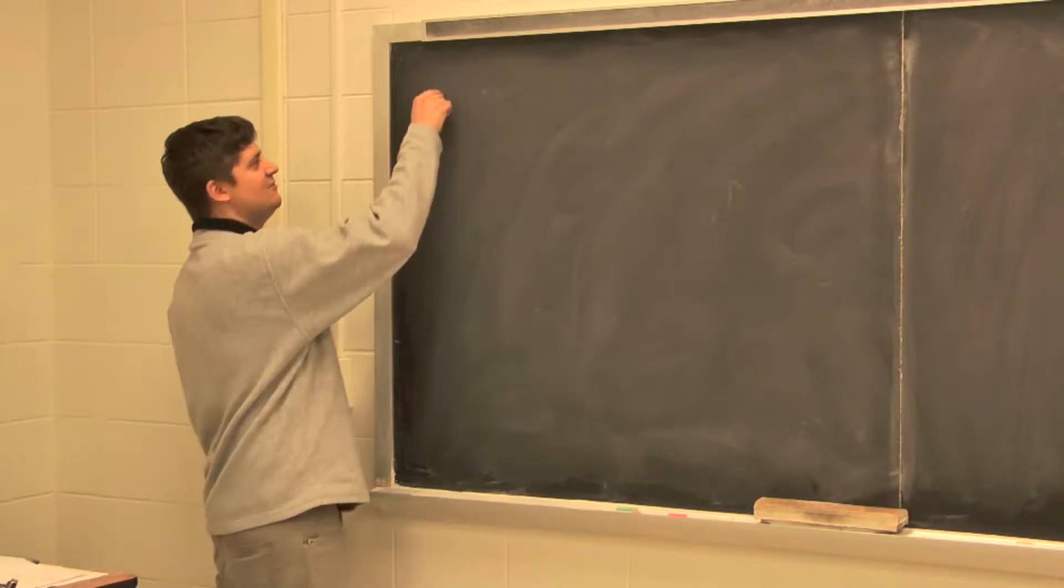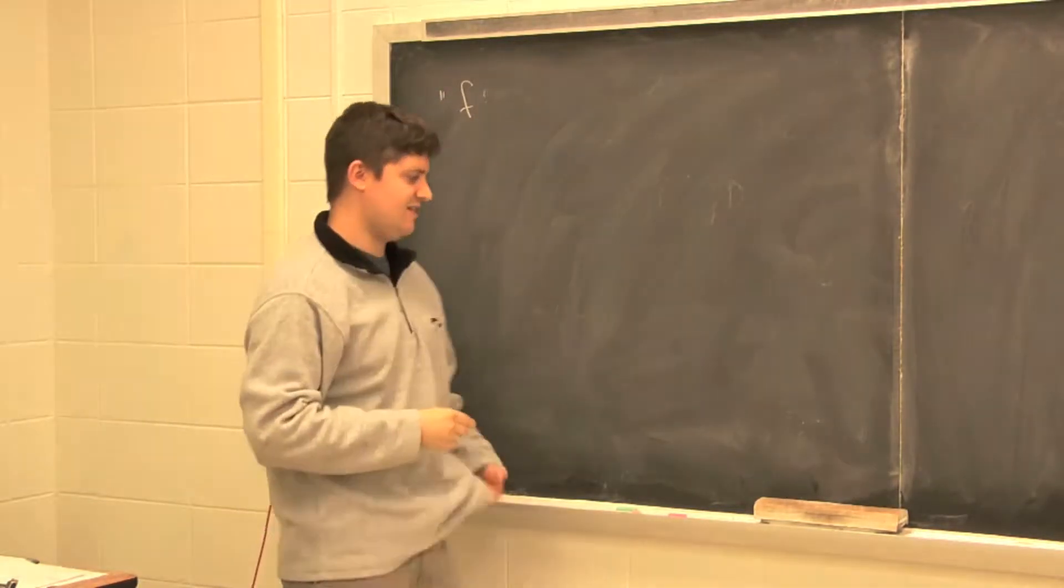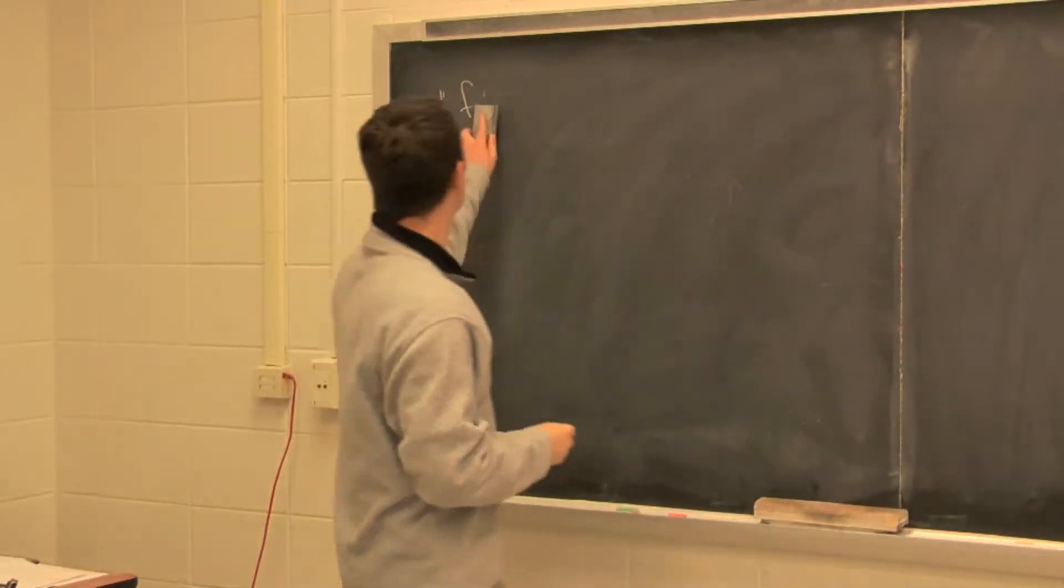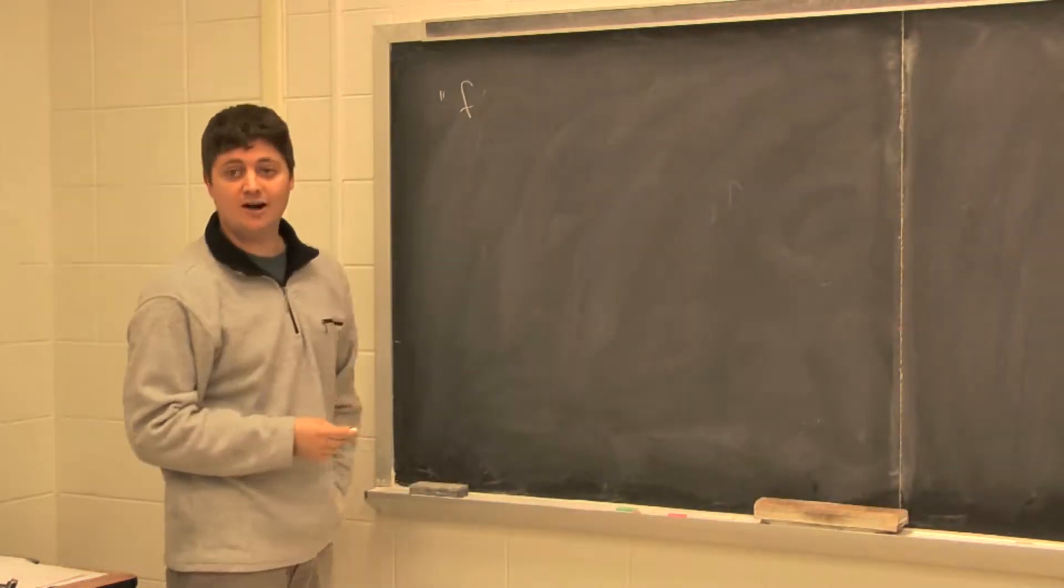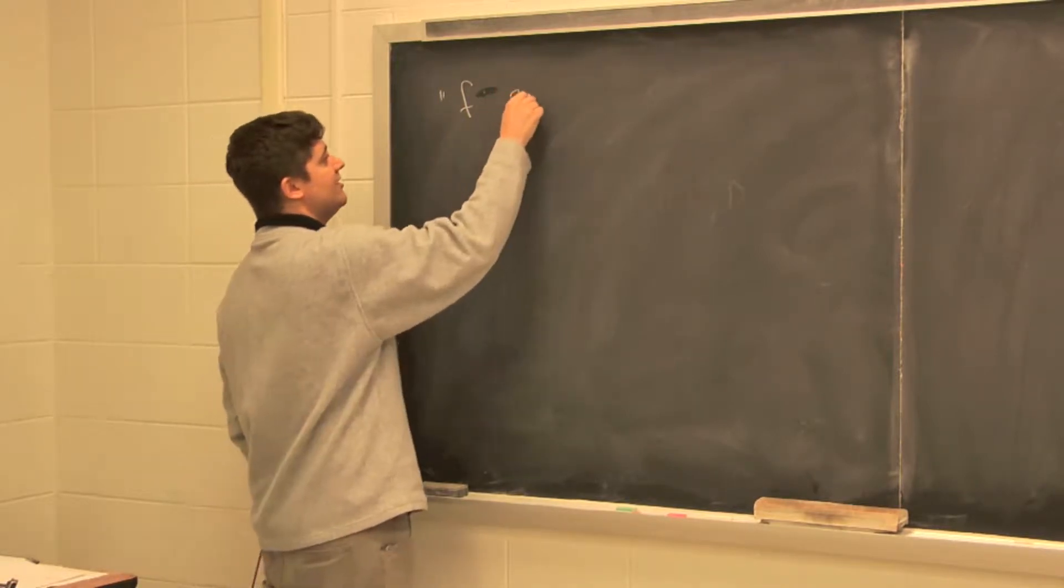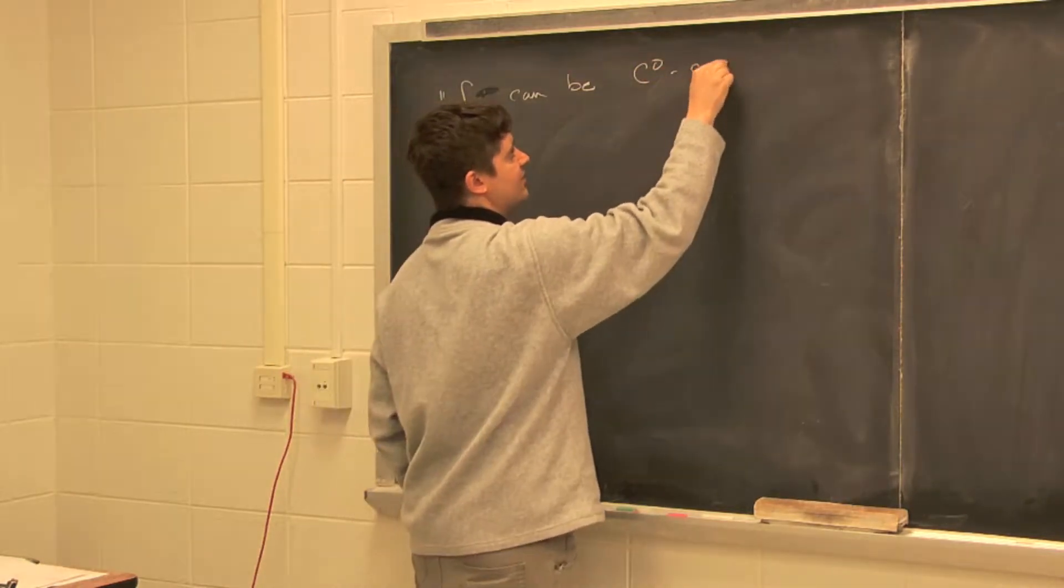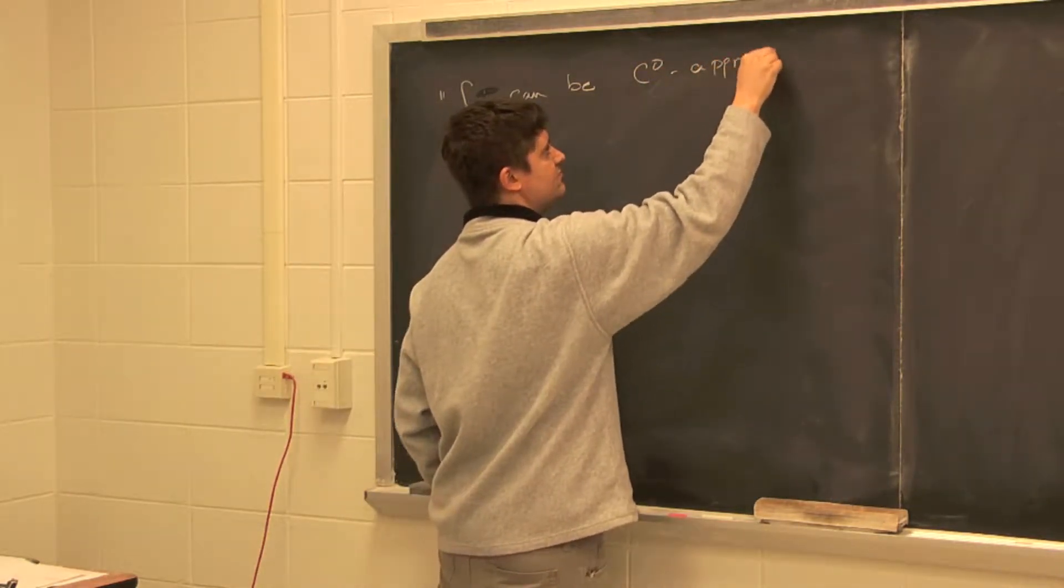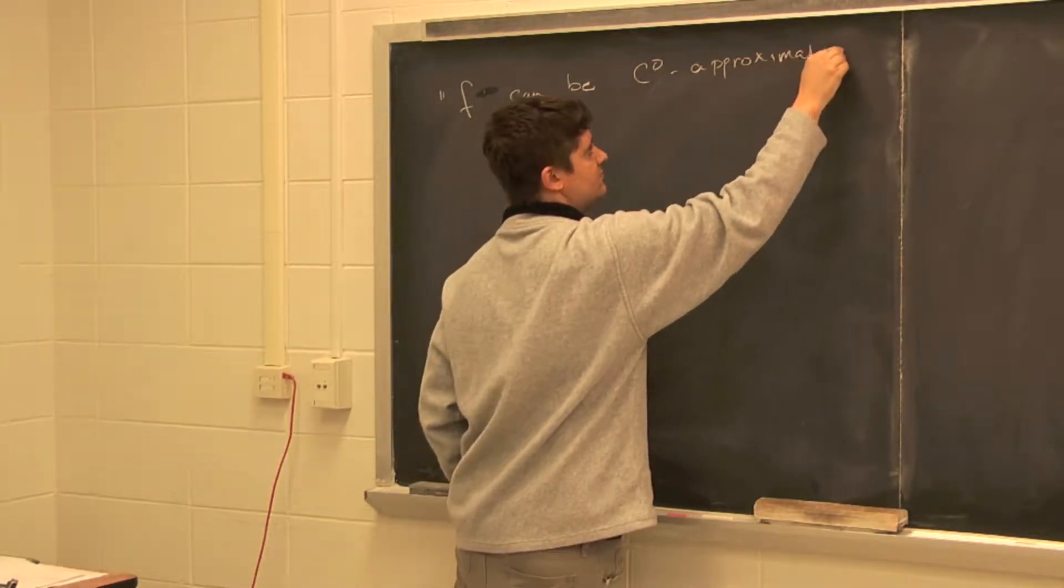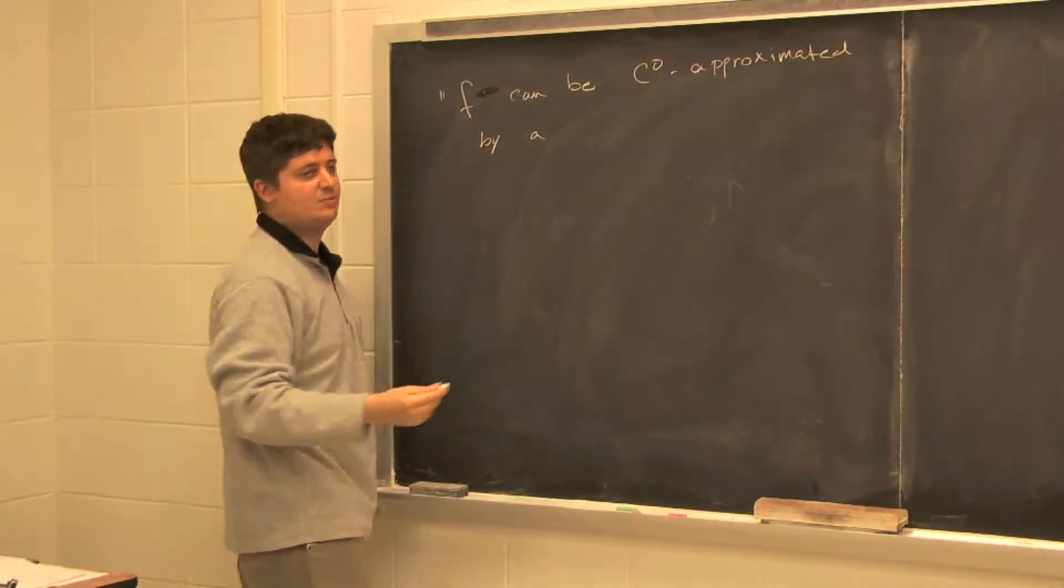It's this thing, this statement: f can be C0 approximated by, for example, a Morse function.